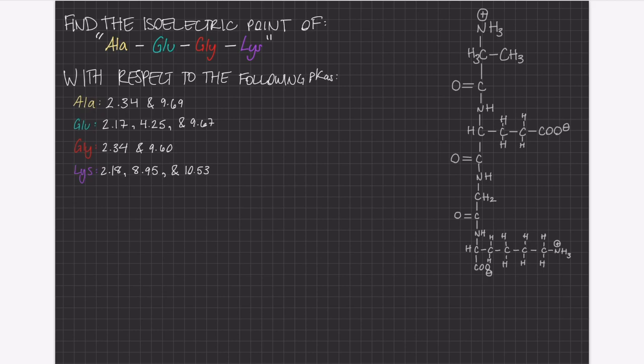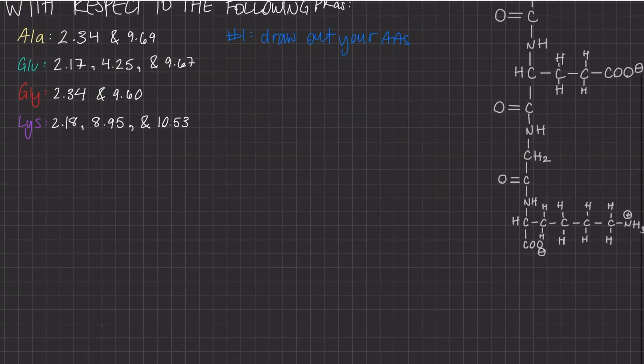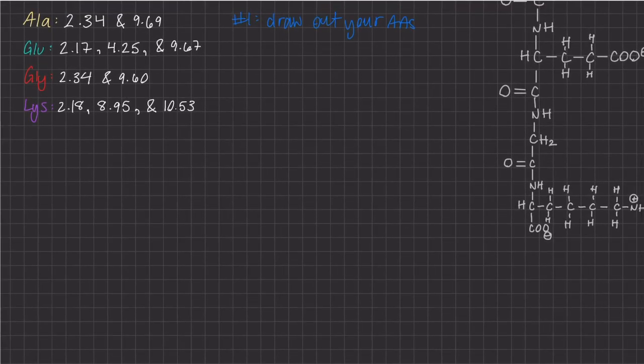Moving on, first thing you want to do is look at the chain, but also consider redrawing the amino acids individually so you can recognize the pKa's to the charges. I will quickly draw alanine and glutamate so you can see what I'm talking about.